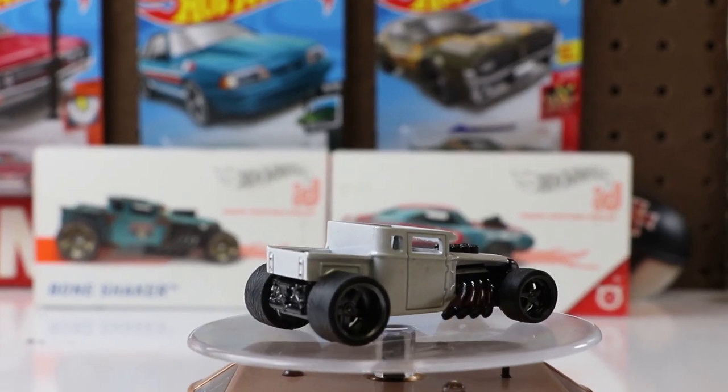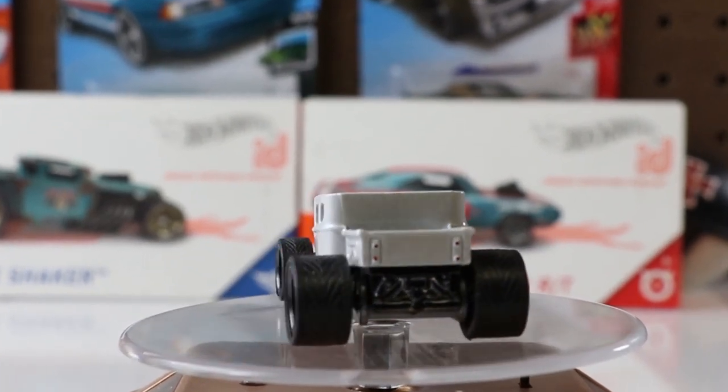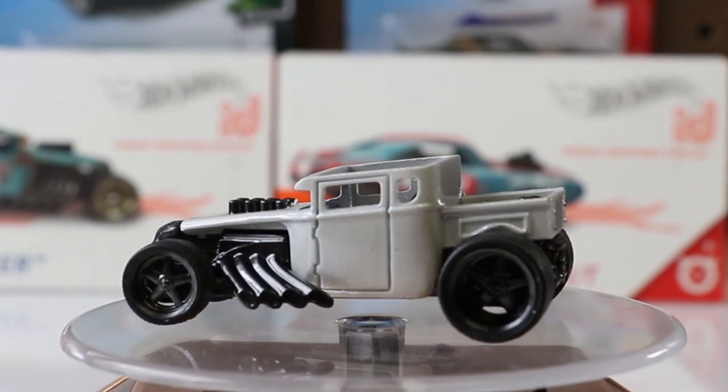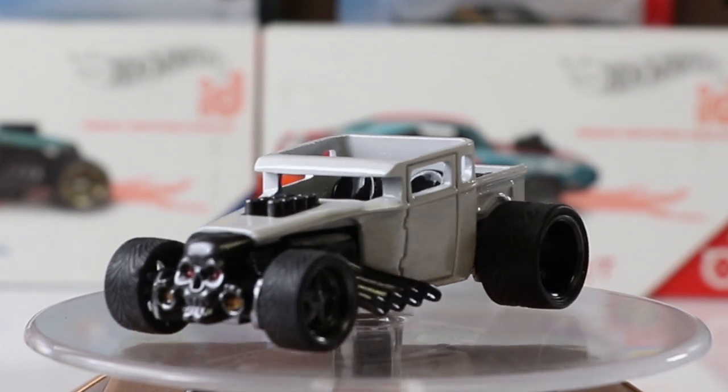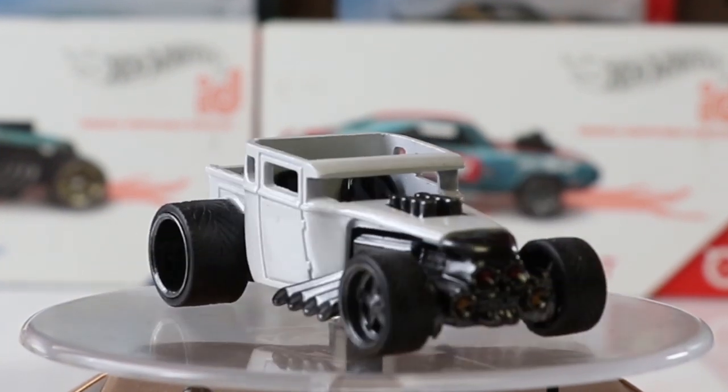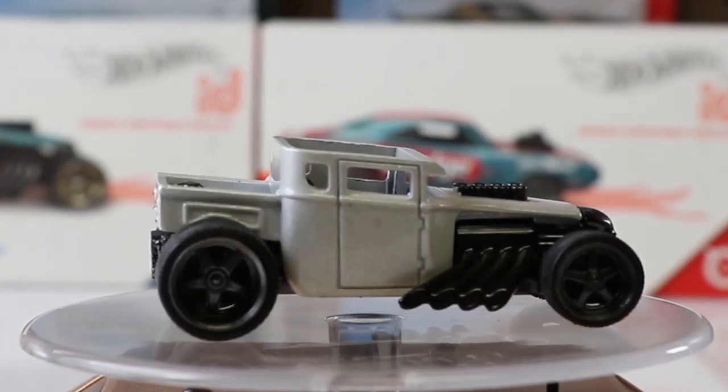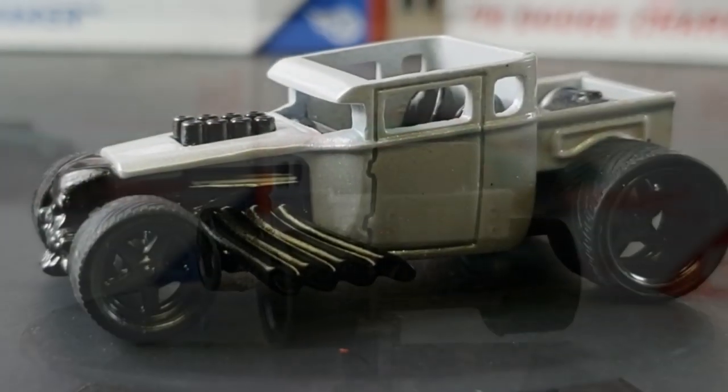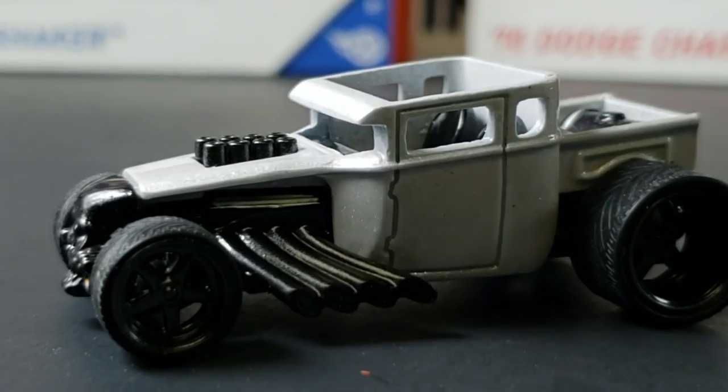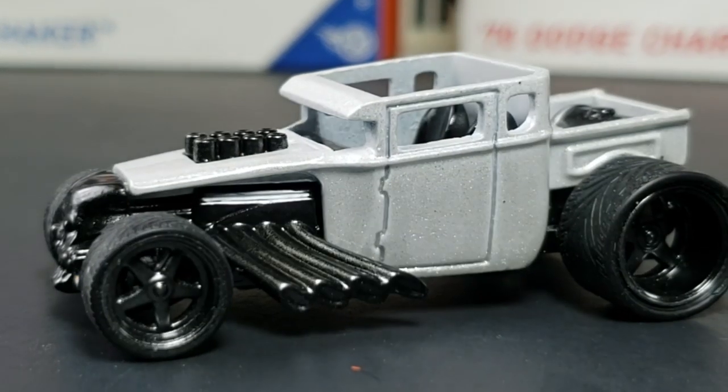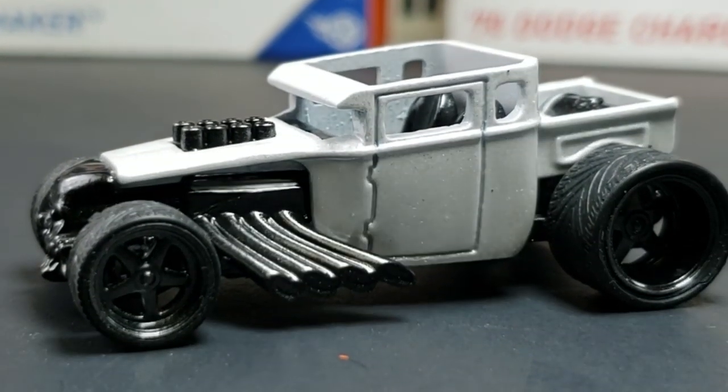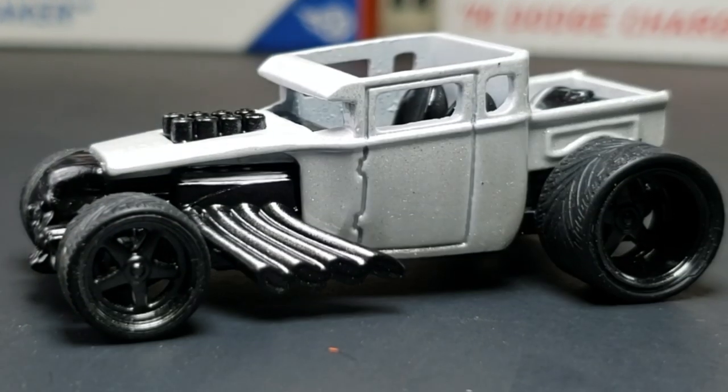It's time for the reveal. Again, you can kind of see the hot rod flake in there. It's definitely bordering more towards white than silver, but it's there. Black chrome bone shaker doesn't get much better than that. I hope you guys enjoy this. Watch the rest of the stuff as I try to show you the actual colors. Appreciate you watching and I'll catch you on the next one.